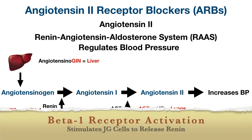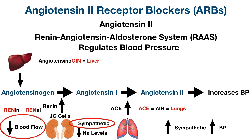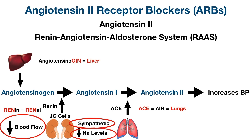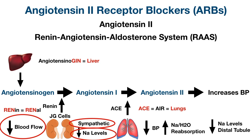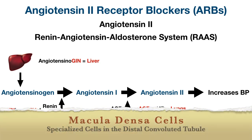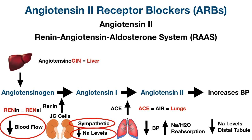The sympathetic nervous system activates beta 1 receptors on JG cells, which causes renin release, which activates the renin-angiotensin-aldosterone system and increases blood pressure. Also, decreased sodium levels in the distal tubule of the nephron can stimulate JG cells to release renin. Whenever there is decreased blood pressure or blood volume, there will be increased sodium and water reabsorption at the proximal tubule. So by the time we get to the distal tubule, sodium levels are low. The macula densa cells detect this and stimulate the JG cells to release renin.